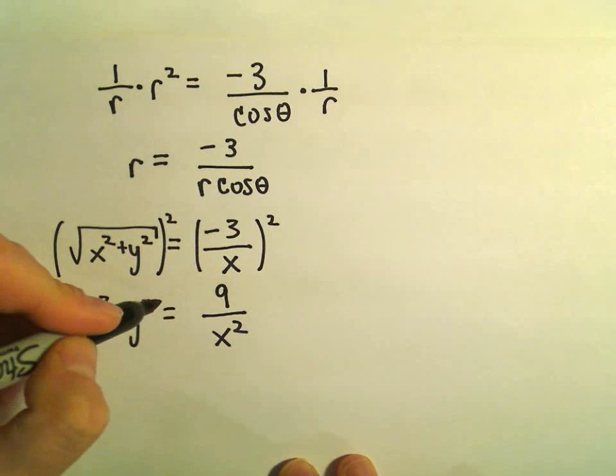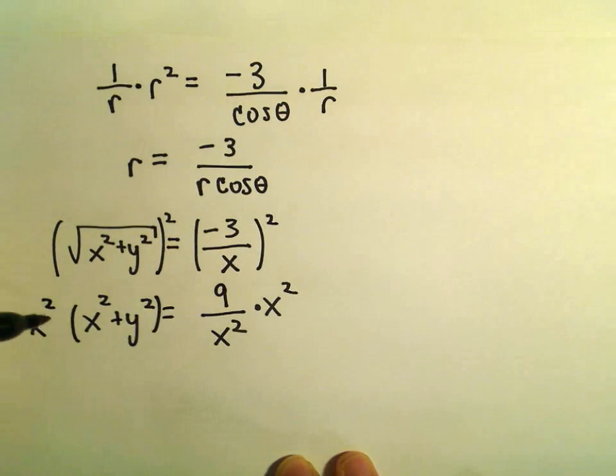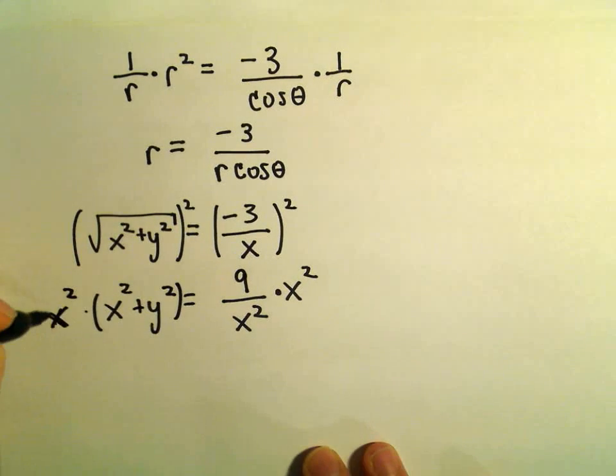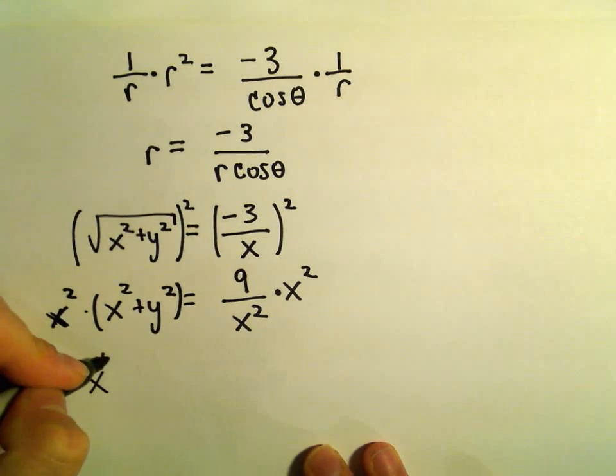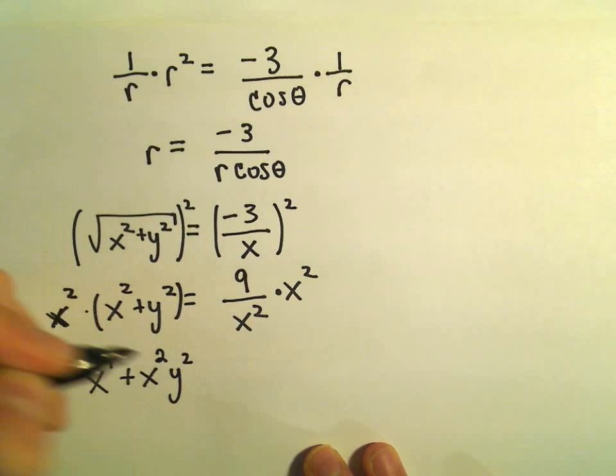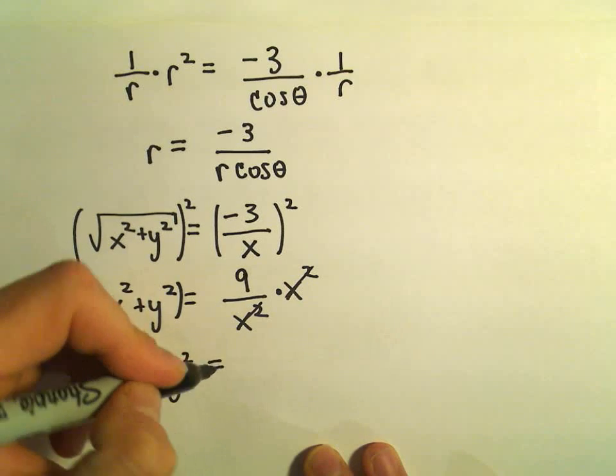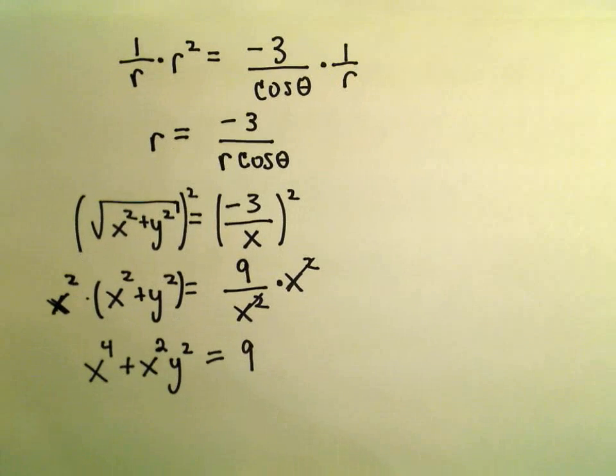And now I think what I'll do is multiply both sides by x². On the left, x² times x² will be x⁴. Then we'll get x²y². On the right, the x² would cancel. We would be left with 9.